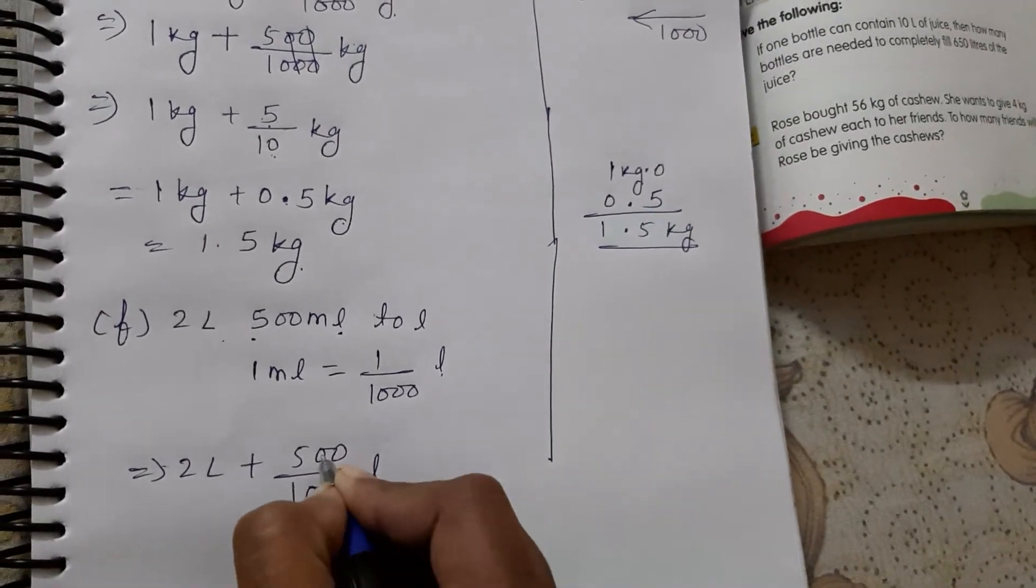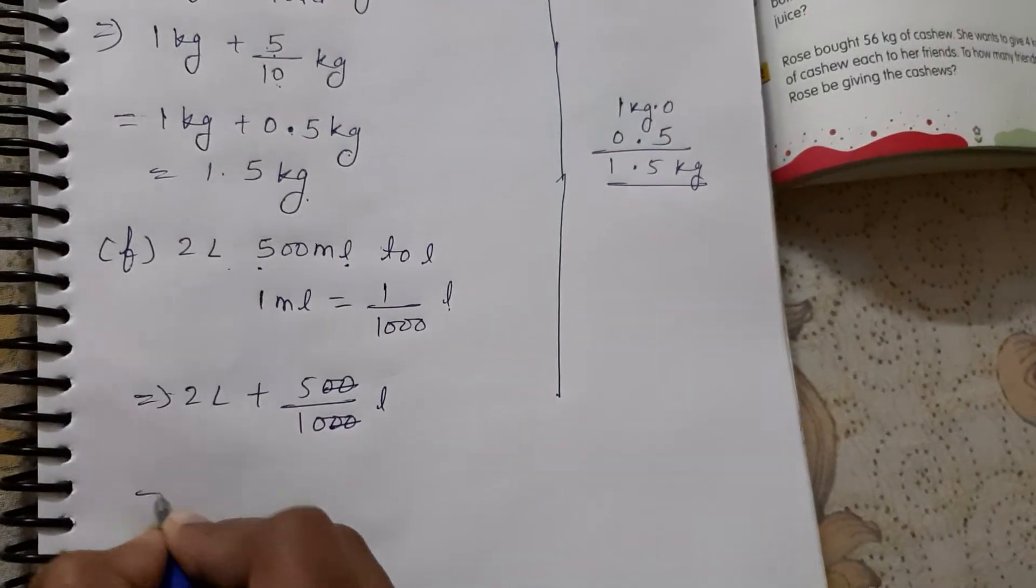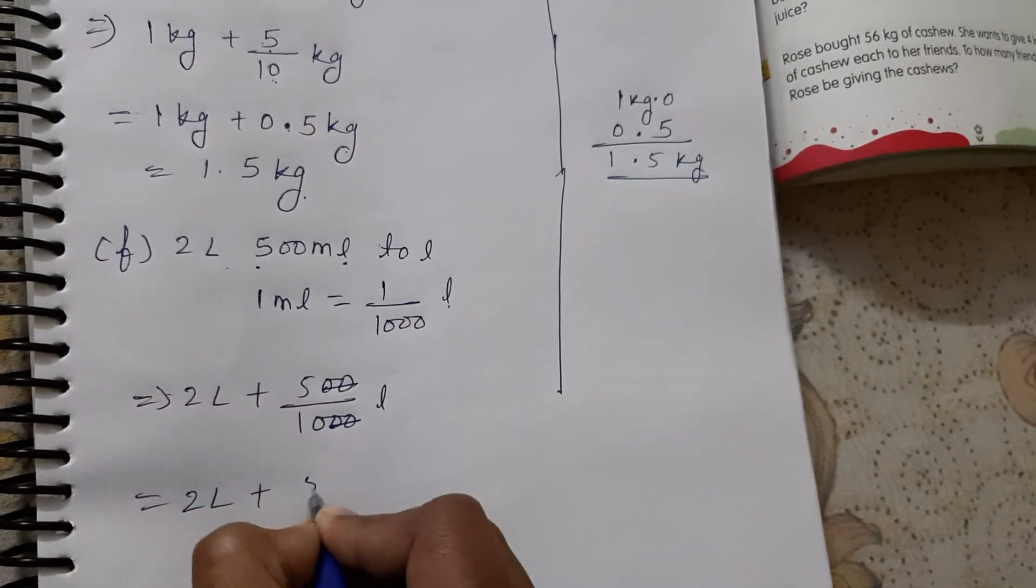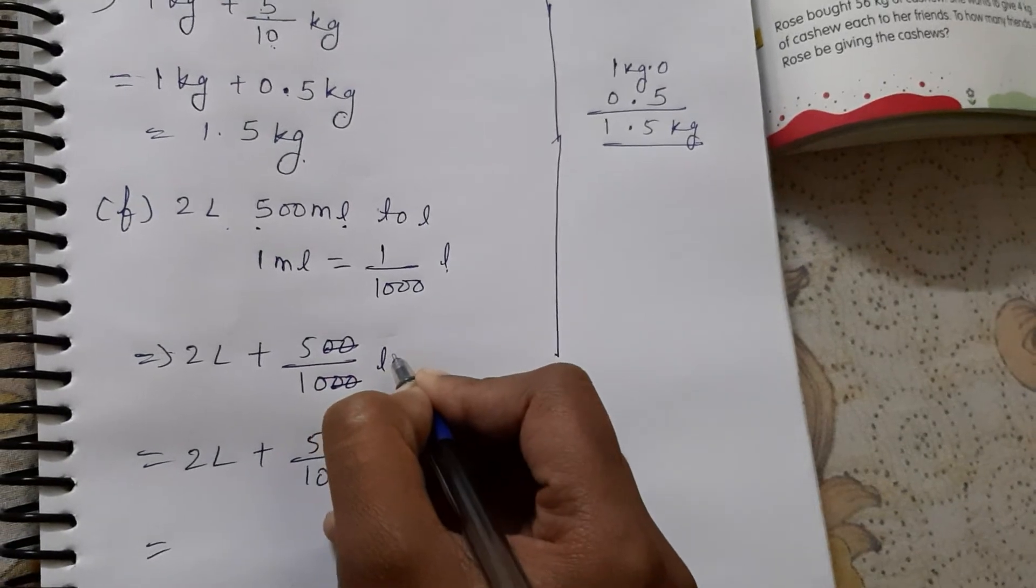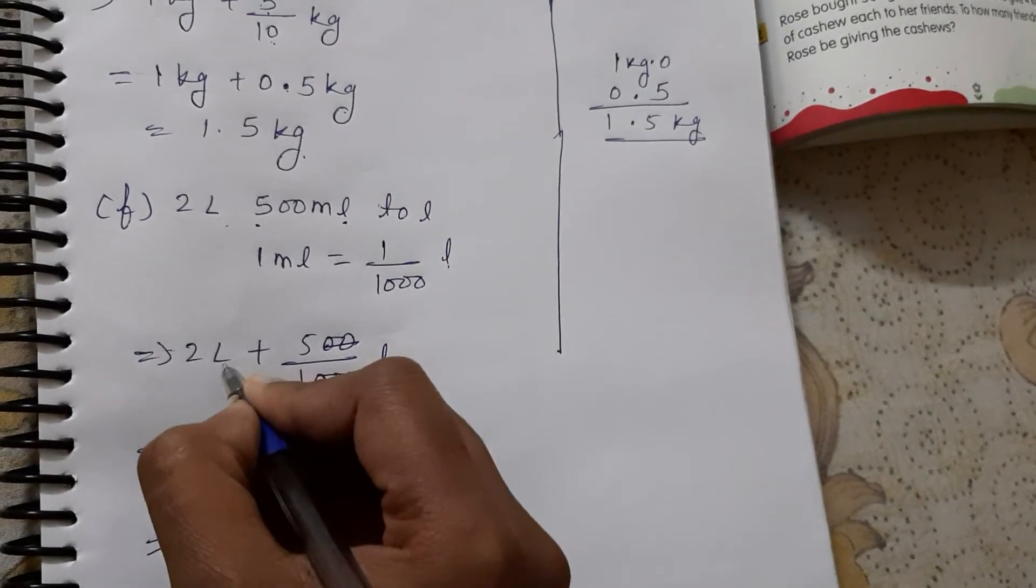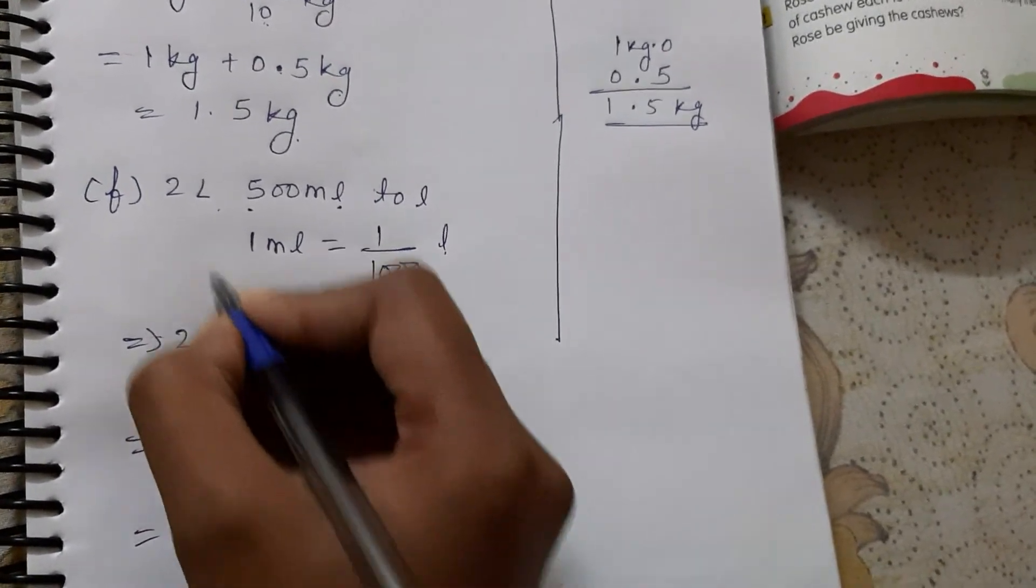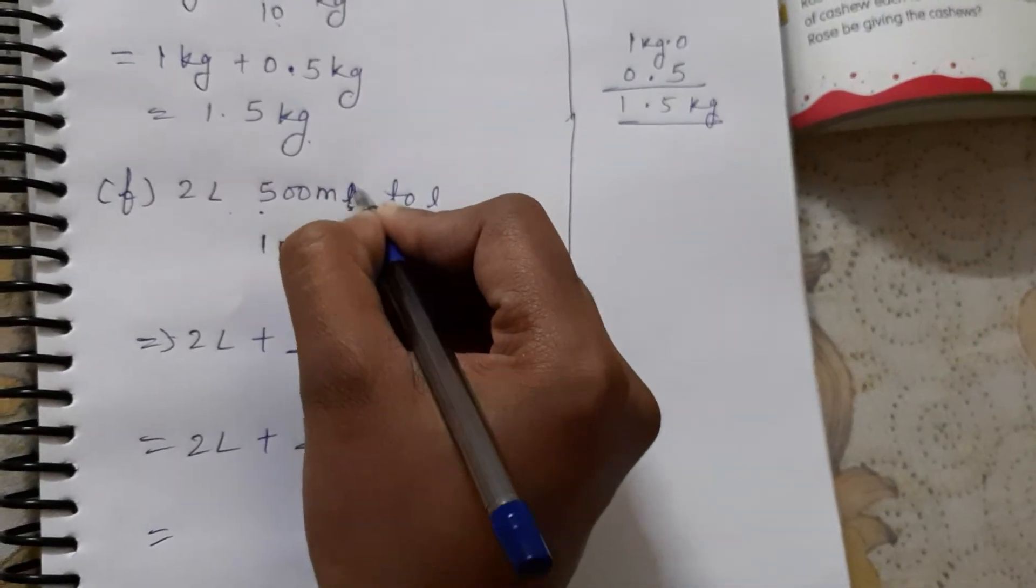Now, two zeros removed in the process. Two liter plus five upon ten liter. You can write a small liter, don't be confused.